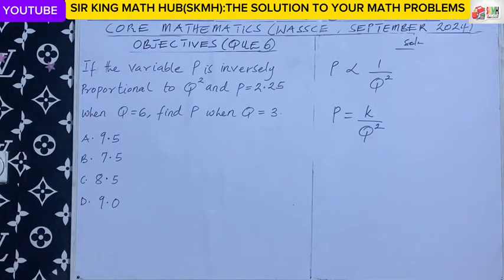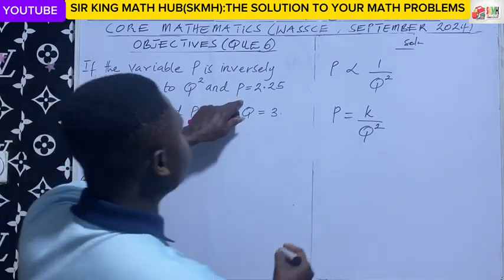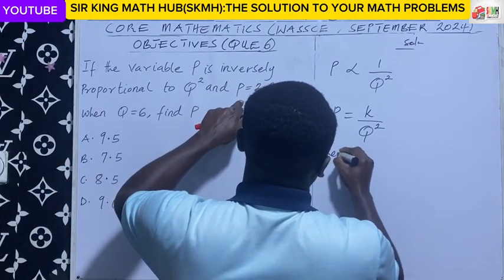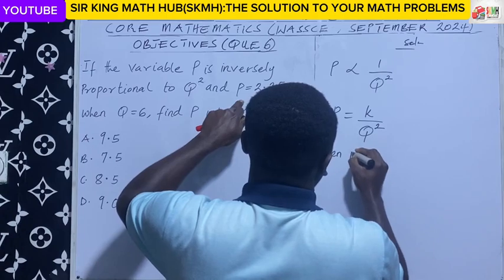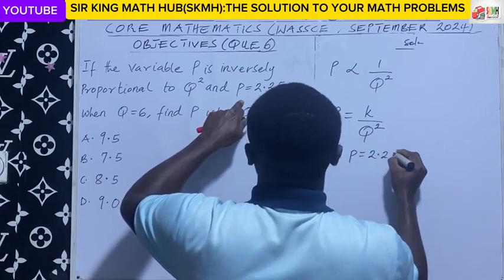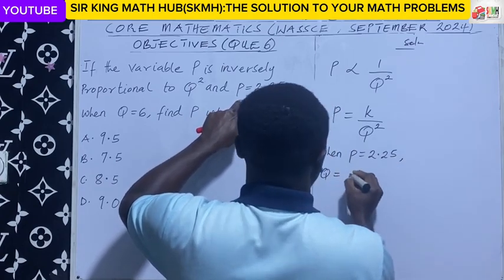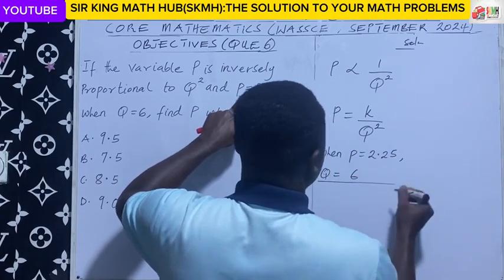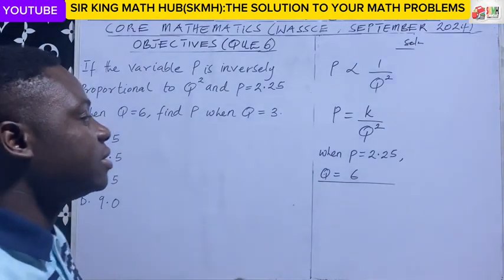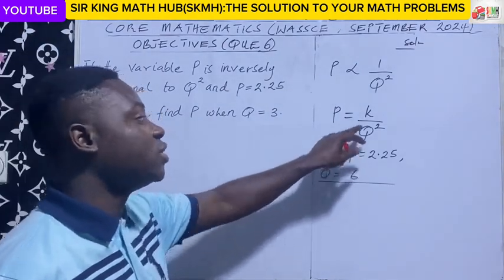Now, we are told that when p is 2.25, k o is 6. So with this information, we can substitute the values of p and k o into the equation.